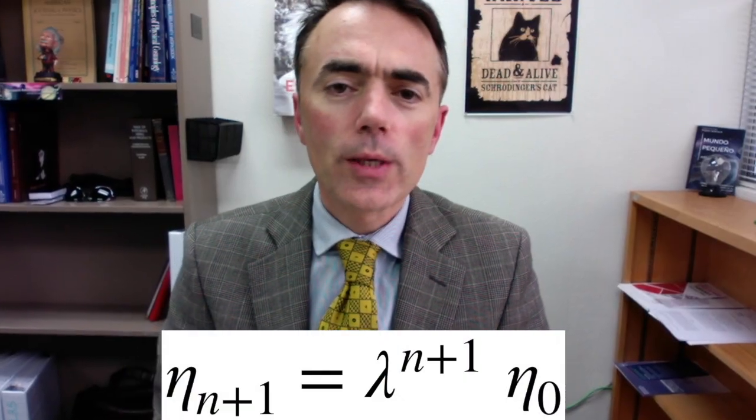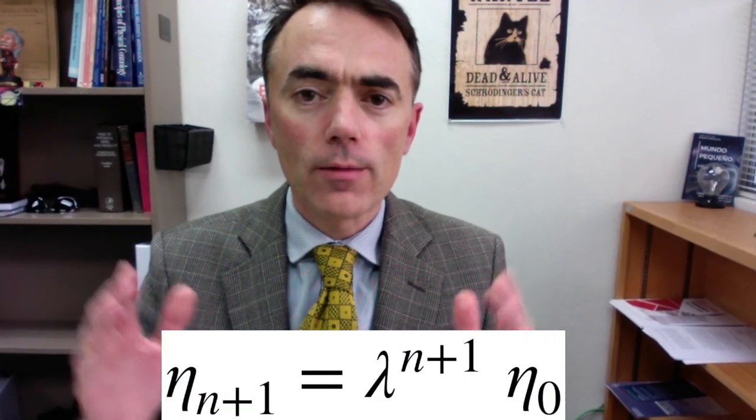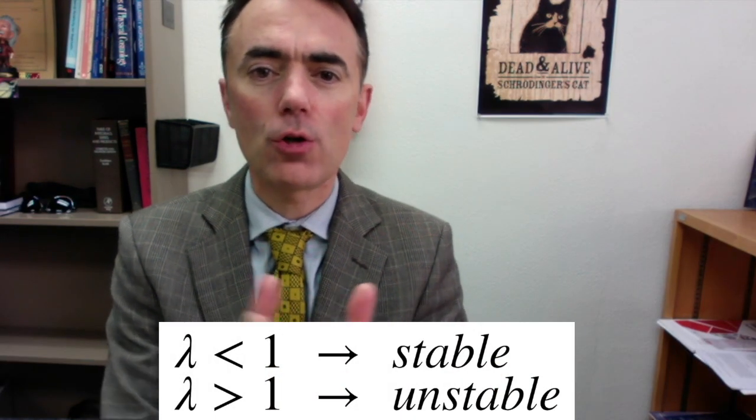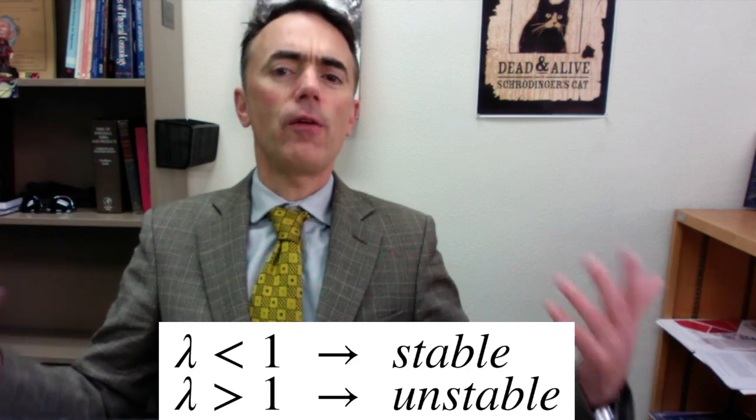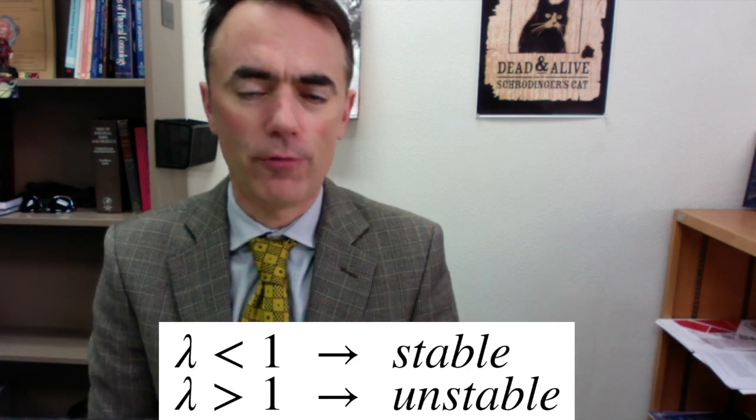From this result, we can see that for lambda smaller than 1, the distance will shrink, and the fixed point will be a stable fixed point, while if lambda is larger than 1, it will grow a little bit more divergent and it will be an unstable fixed point.